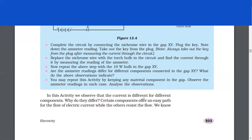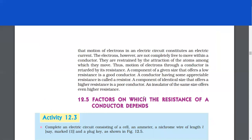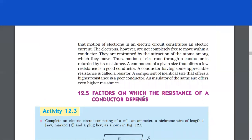Certain components offer an easy path for the flow of electric current, while the others resist the flow. We know that motion of electrons in an electric circuit constitutes an electric current. The electrons, however, are not completely free to move within a conductor. They are restrained by the attraction of the atoms among which they move. Thus, motion of electrons through a conductor is retarded by its resistance. A component of a given size that offers a low resistance is a good conductor. The conductor having some appreciable resistance is called a resistor. A component of identical size that offers a higher resistance is a poor conductor. An insulator of the same size offers even higher resistance.